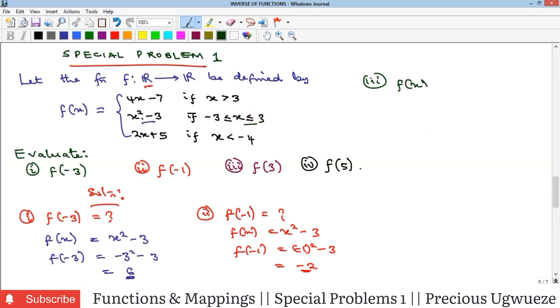Our f of x here is still x squared minus 3. That means our f of 3 is going to be 3 squared minus 3, which gives us 9 minus 3, which is 6.